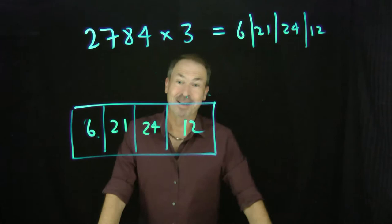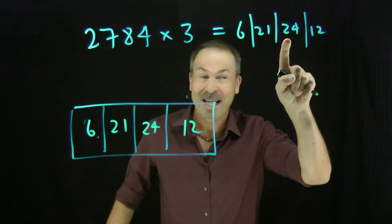Now, the fun part is saying that answer. Here goes: 6,2100, 24, 12. Great and good. There it is.